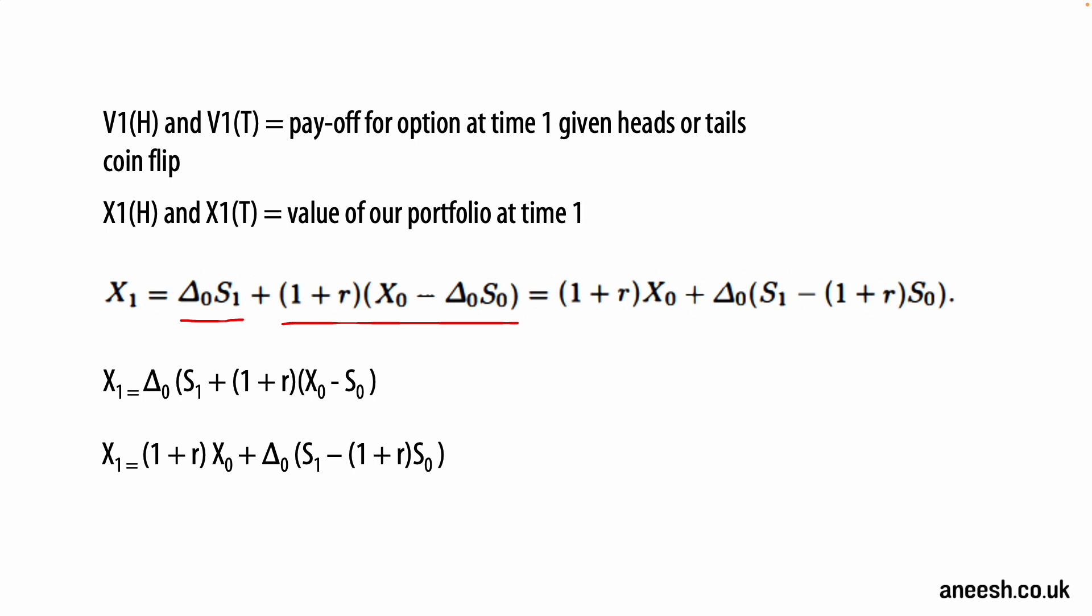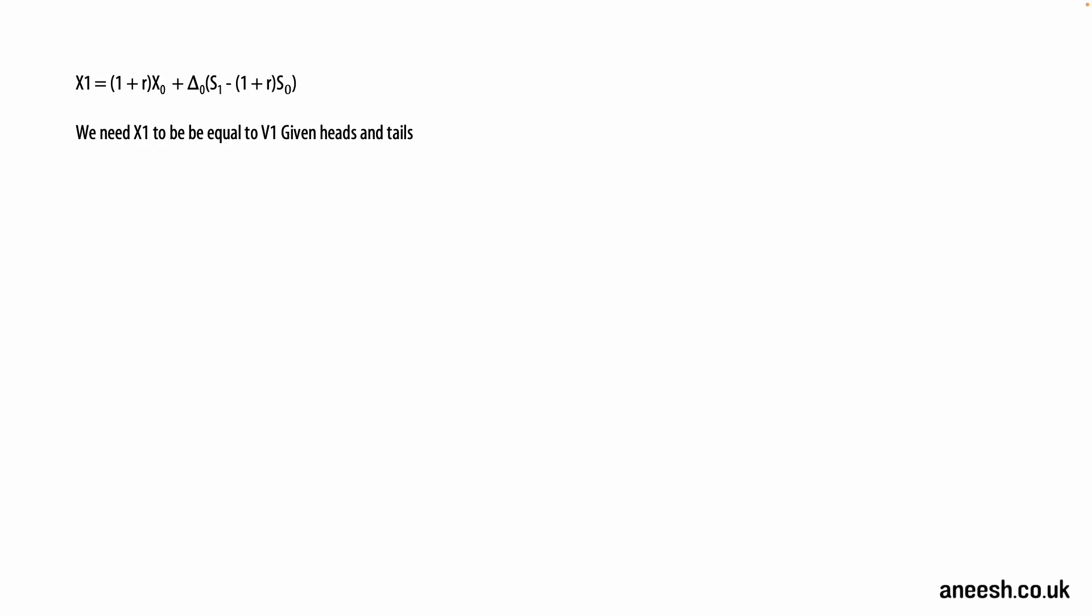We're now going to see how we can solve for X0 using this term of X1. At the top we have our formula for X1 with respect to the cash position X0 and the stock prices of S1 and S0. As we want our cash position to be equal to the value of the option at time one, we want X1 to be equal to V1 regardless of heads or tails.